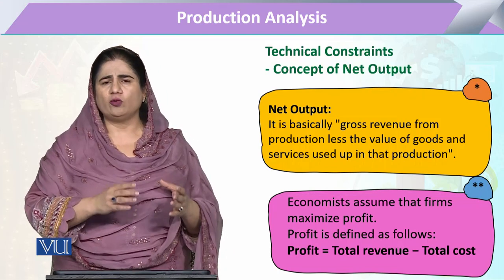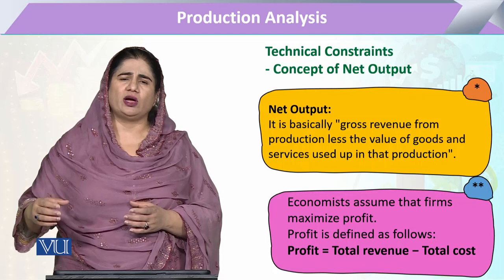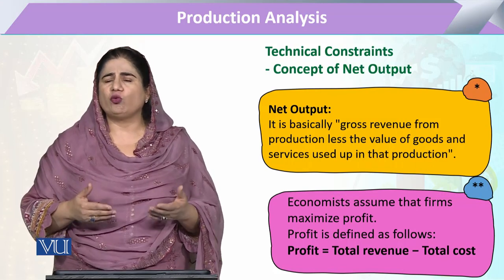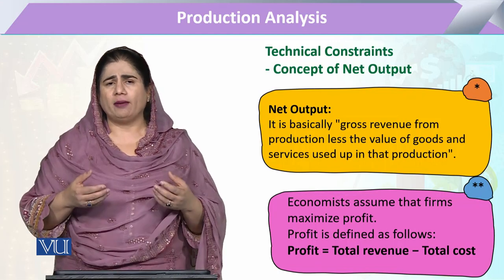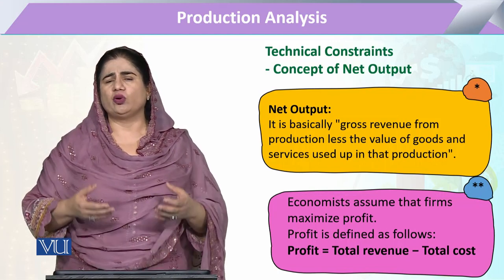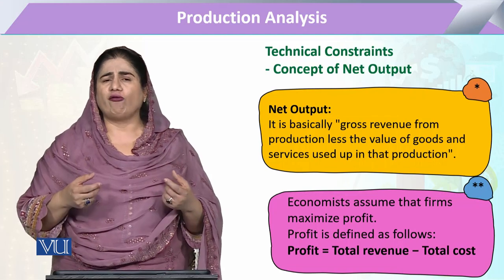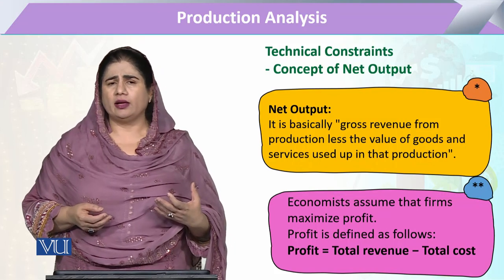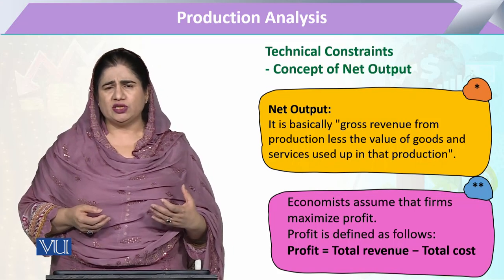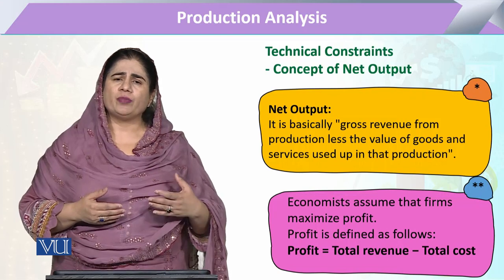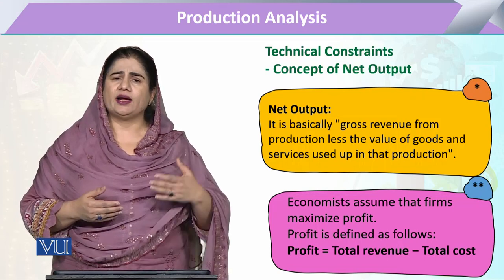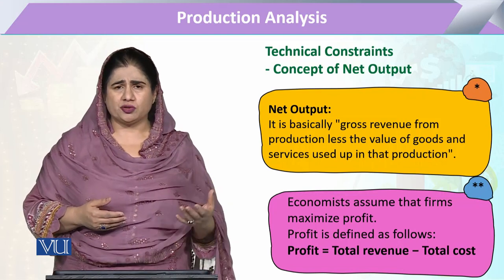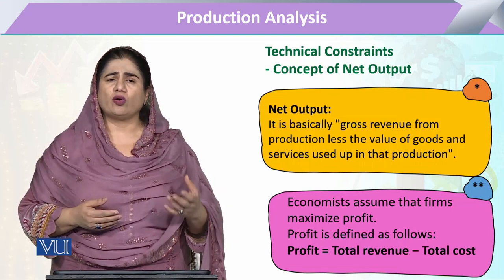Total output minus total cost equals total revenue, and that total revenue we are naming here as net output. This net output is the basic thing for an entrepreneur to decide whether he is earning well enough to sustain his business in the future, or whether he needs to adopt a different production process or a least-cost method to reduce certain costs.